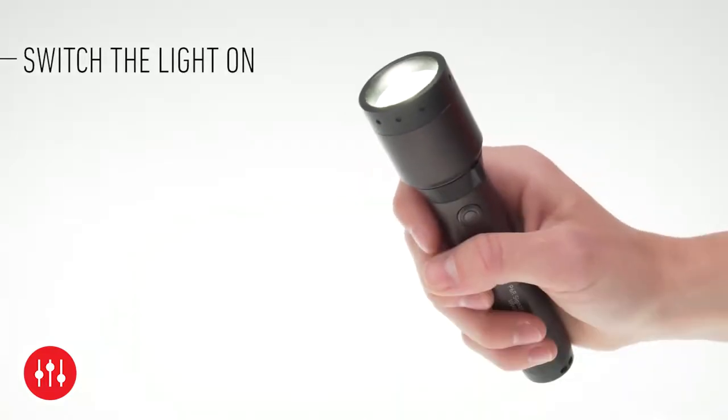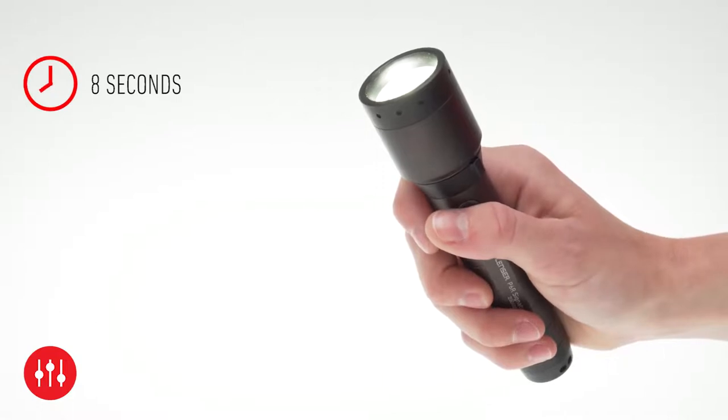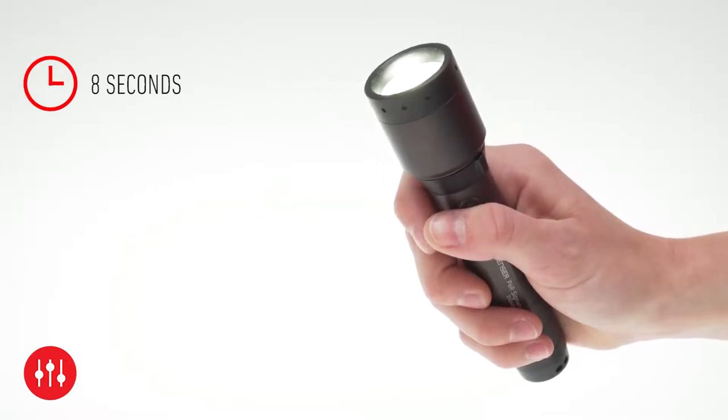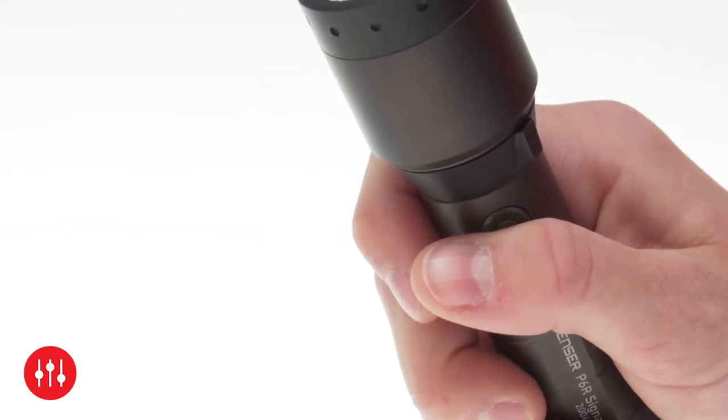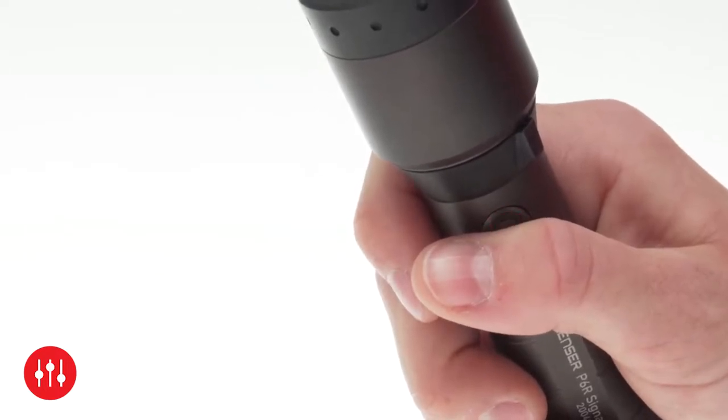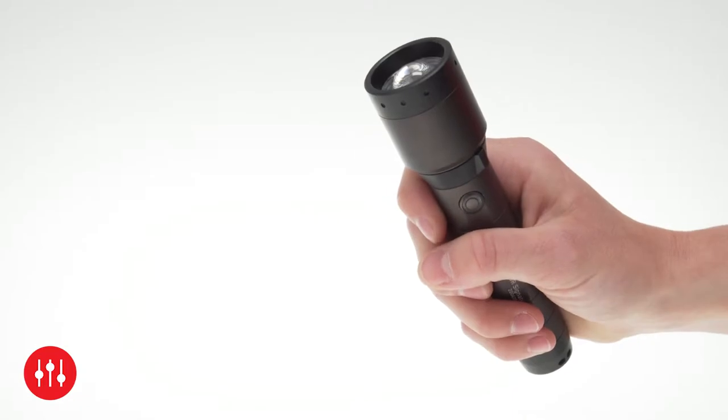Now press and hold the switch for a total of 8 seconds. After 5 seconds, the switch will flash red once. Keep it pressed until it flashes red twice. You are now in the setting mode of the optional functions.